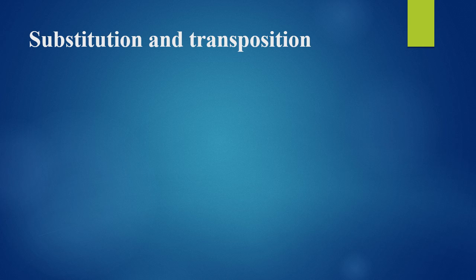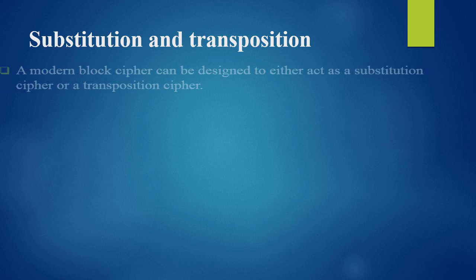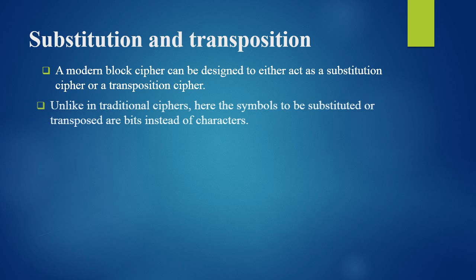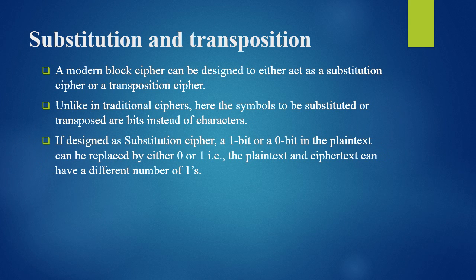What are substitution and transposition ciphers? A modern block cipher can be designed as either a substitution cipher or a transposition cipher. If designed as a substitution cipher, a 1-bit or a 0-bit in the plaintext can be replaced by either 0 or 1. We call it a substitution cipher because we are substituting different bits, 0 or 1, in place of our original plaintext bits.